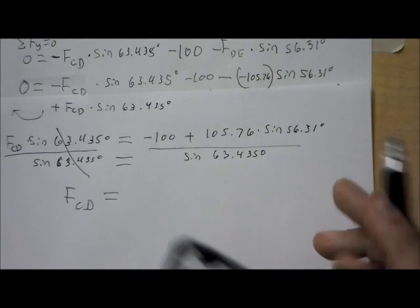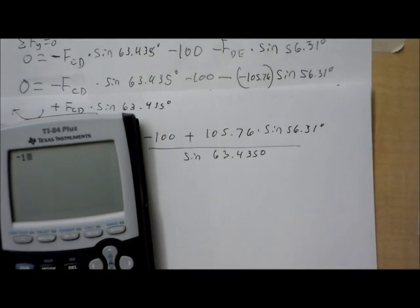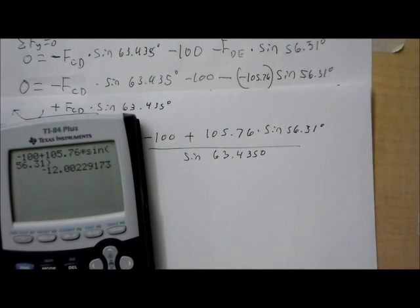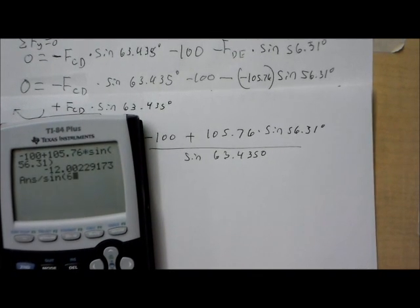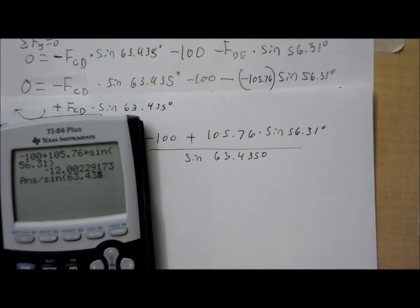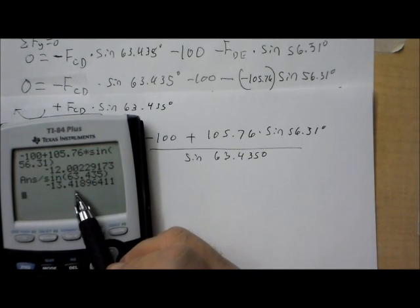So, negative 100 plus 105.76 times sine 56.31, enter. Then, I'm going to divide by sine 63.435. And, I get negative 13.42.